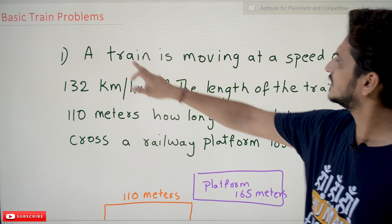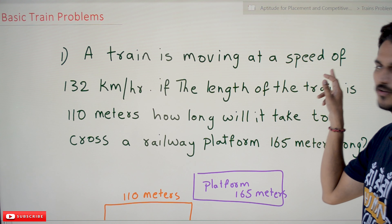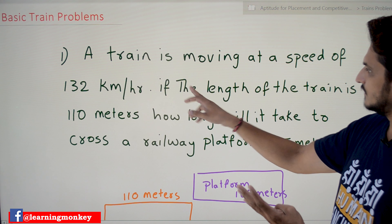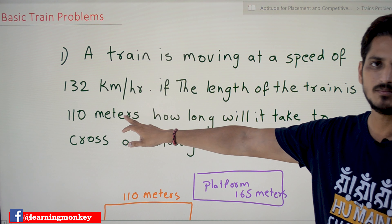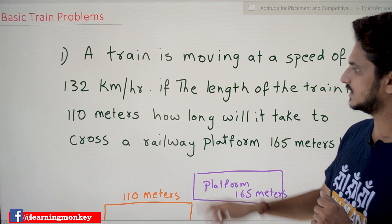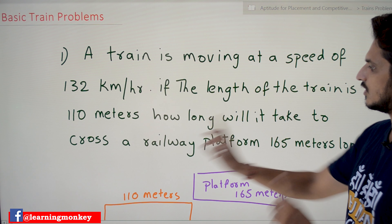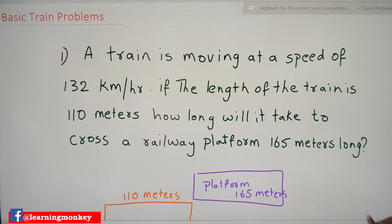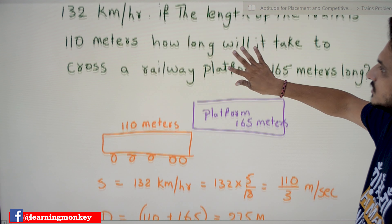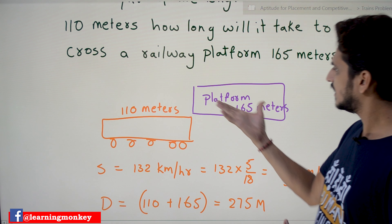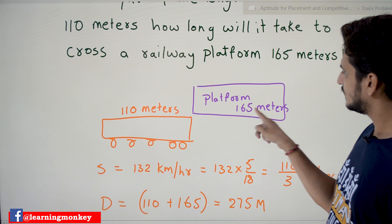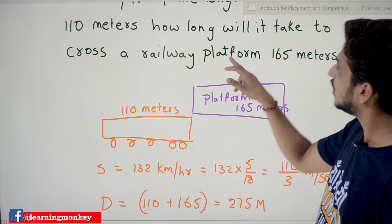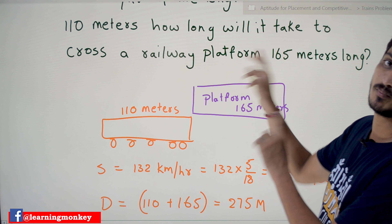Coming to the question. A train is moving at a speed of 132 km per hour — the speed is given. The length of the train is 110 meters — the length of the train has been given. How long will it take to cross a railway platform 165 meters long? From the graphical intuition in our last class: assume this is a platform, this platform is 165 meters long and the train is 110 meters long.